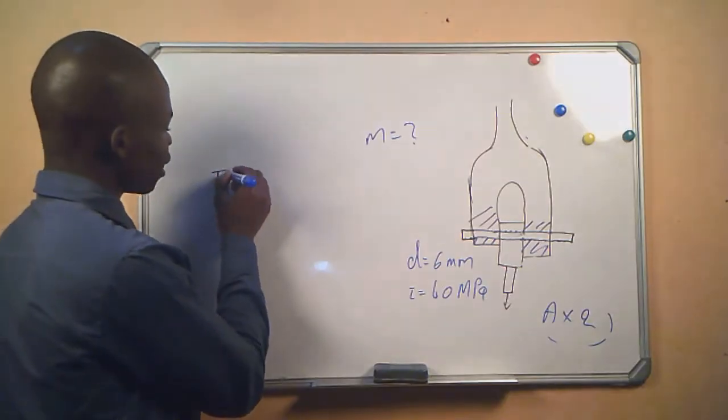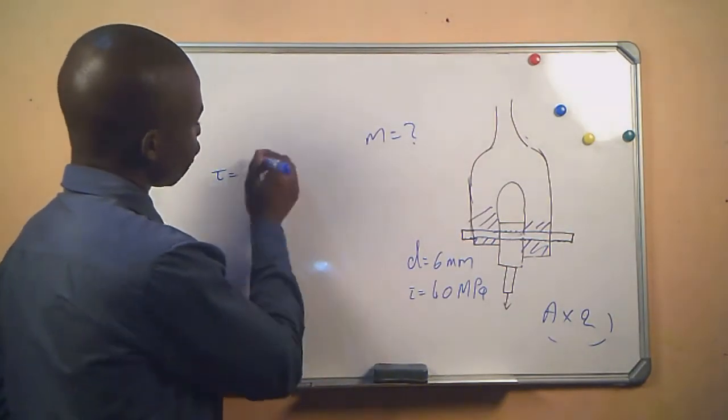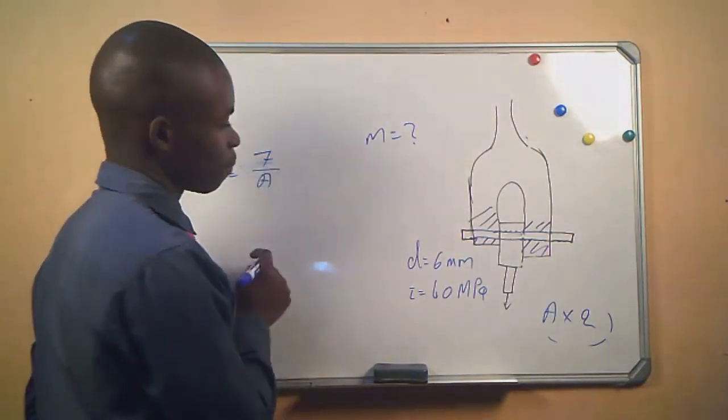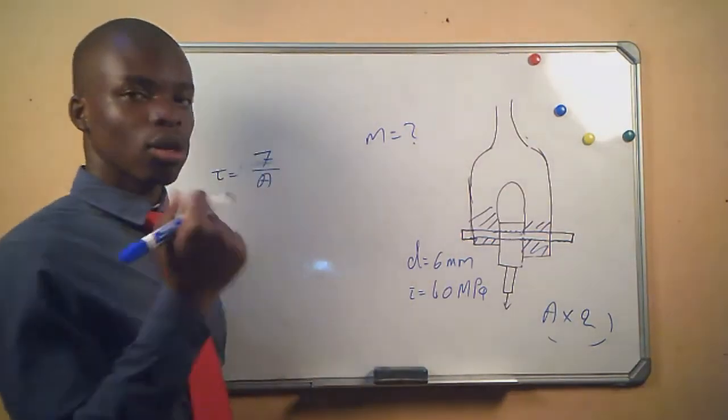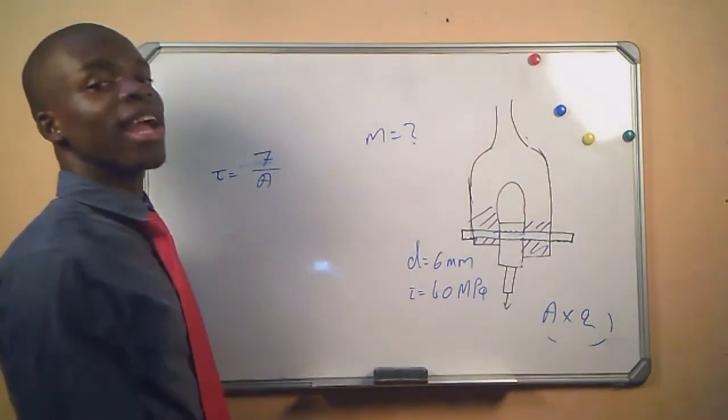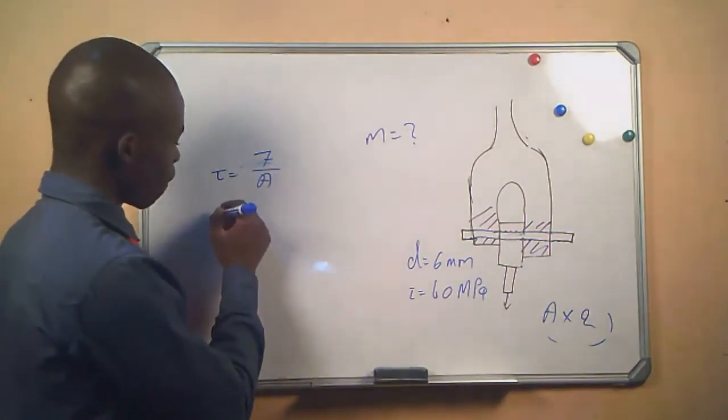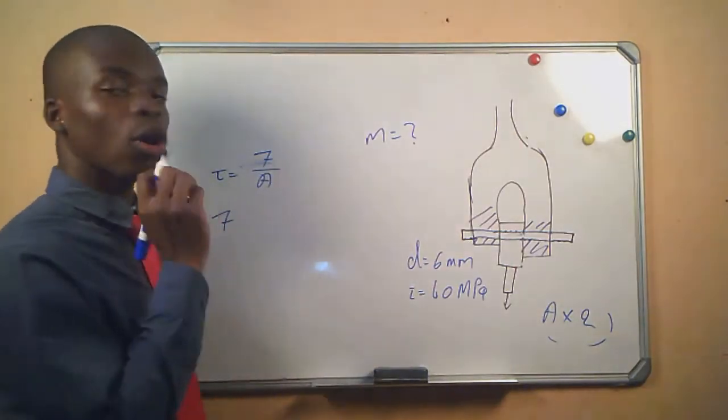We know that the shear stress equals the force divided by the area. Do we have the force? No, we don't. Do we have the area? We can calculate this. We have the diameter. Do we have shear stress? Yes we do. So the force is the only thing that we do not have here.